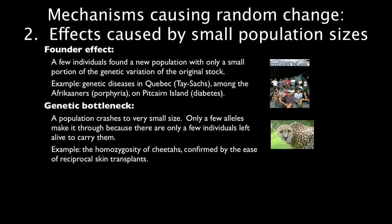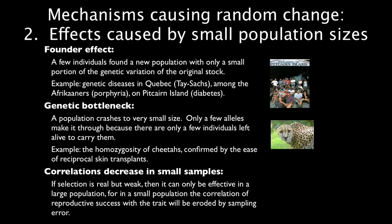The other population size effect is a genetic bottleneck, where a population crashes to very small size. Only a few alleles make it through because there are only a few individuals to carry them. An example is the homozygosity of cheetahs, confirmed by reciprocal skin transplants — you can transplant skin between any two cheetahs in the world and it will not be rejected; they have lost that much genetic variation in their immune systems. Another important effect is that correlations decrease in small samples: if selection is real but weak, it can only be effective in a large population, because in a small population the correlation of reproductive success with a trait is eroded by sampling error.